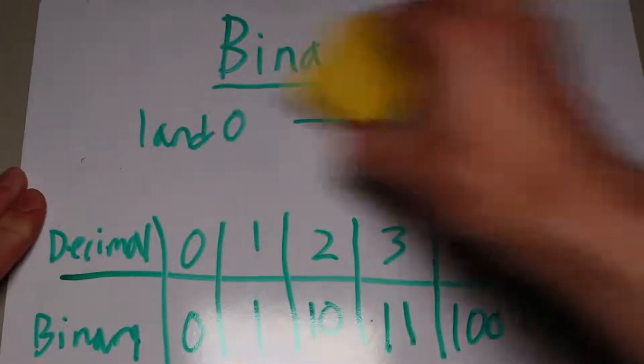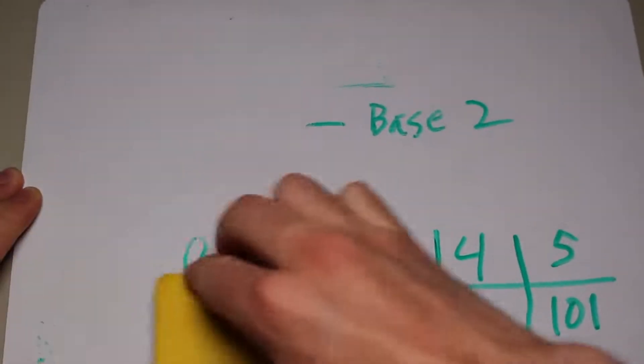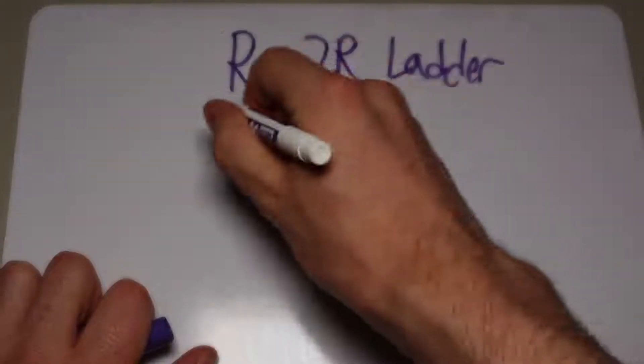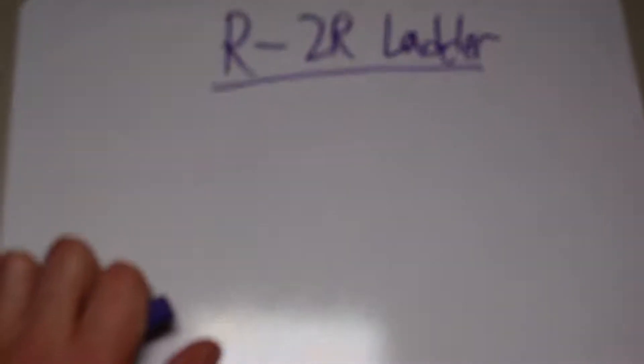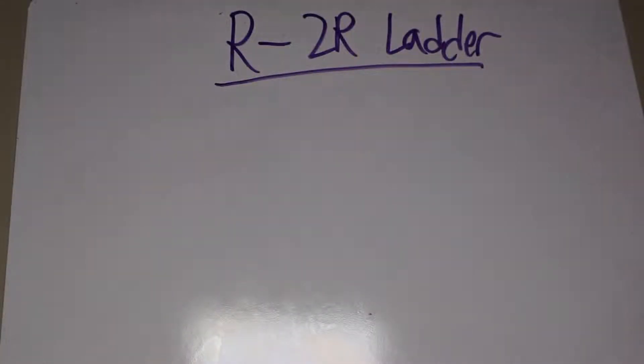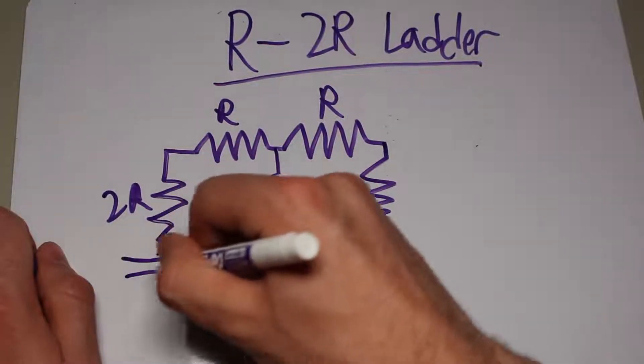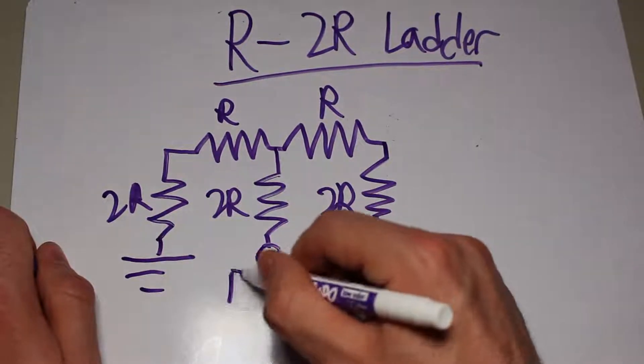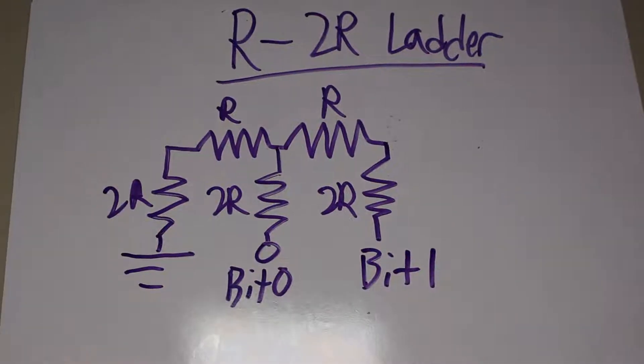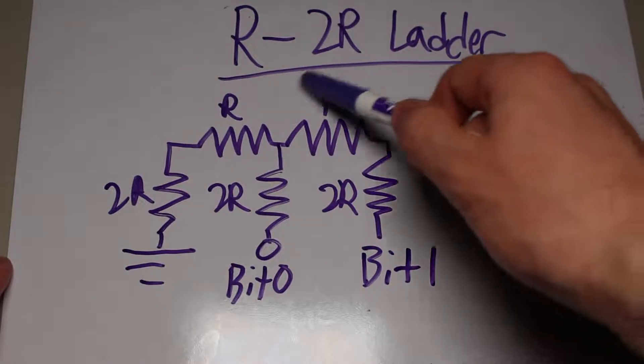Anyways, one of the most popular methods to construct a DAC that will take those binary numbers that we just discussed and turn them into an analog signal is the R2R ladder. Its name represents the values of resistors that we'll be using to construct it. So drawing a two bit R2R ladder, we can see the pattern that it uses already.